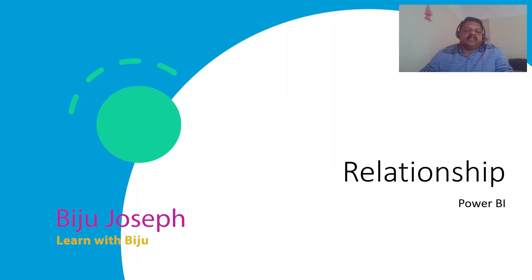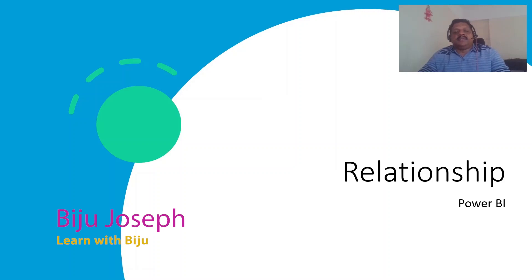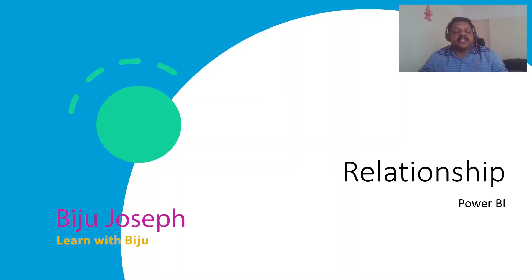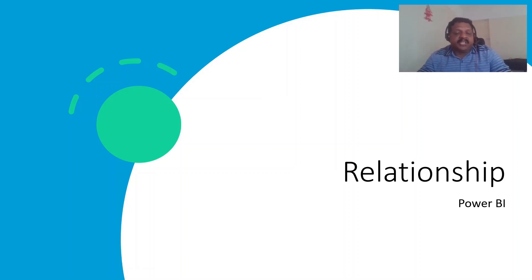Let's talk about visualization and relationships in Power BI. We will cover the different types: one-to-one, one-to-many, many-to-one, and many-to-many — that is what we are going to do in this video.